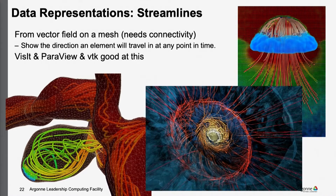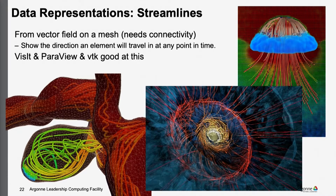Another representation often used is streamlines, which comes from vector field data on a mesh with connectivity. It essentially shows the direction a particle placed into the flow field would travel at any point in time. Within a single time step it traces that path: you look at a position, see what vector comes from that position, move to the next position, and so on, forming the streamline path. All these tools handle this well.